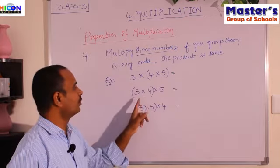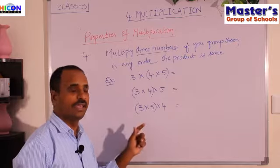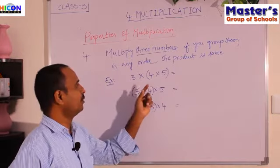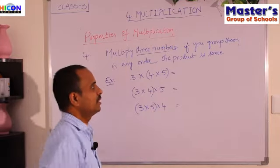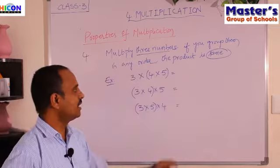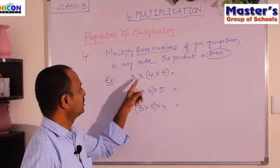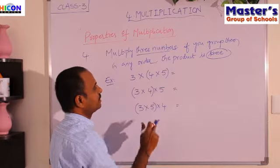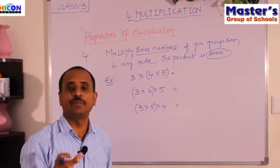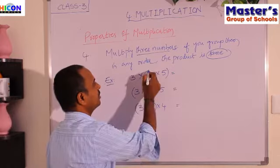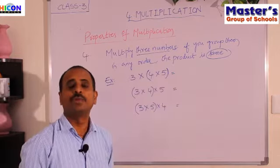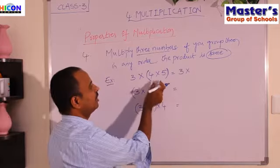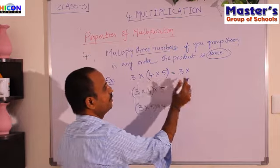In the second case, I have grouped the two numbers 3 and 4. In the third case, I have grouped the numbers 3 and 5. So if you multiply three numbers and group any two numbers among them, the product will be the same in each case. Let us find out the answers. In any problem, you have to multiply the numbers kept in brackets first. These are called brackets.